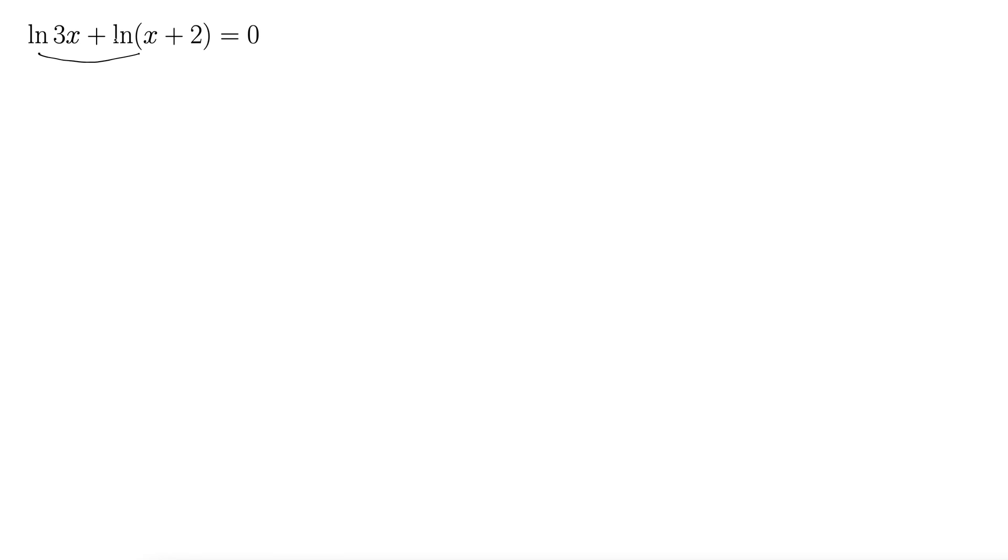You're trying to solve for x. You first use the properties of logarithms. What those tell us is that this becomes multiplication inside a single natural log. So this becomes natural log of 3x times x plus 2, all equals 0. Now we have it inside a single natural log.